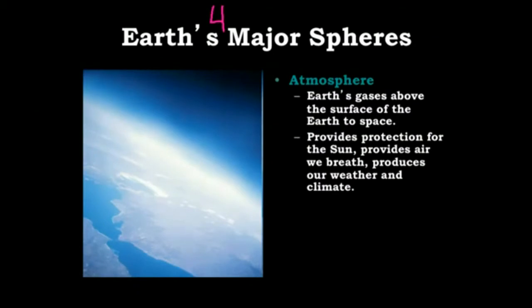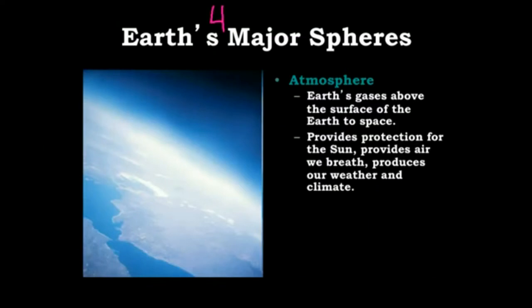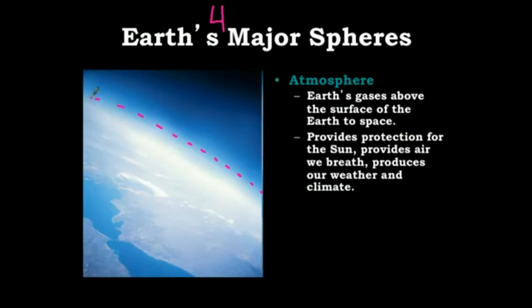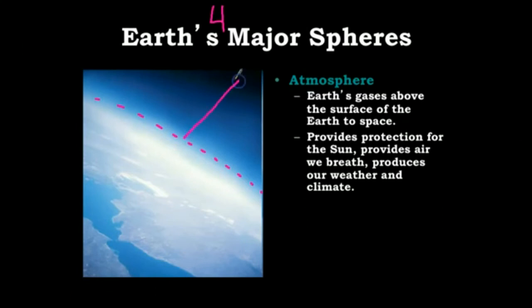So we're actually looking at a picture of the atmosphere on the edge of the Earth. So here is the edge of the clouds. The atmosphere goes up out into space. If you can see the change in color, that is because the further away you get from Earth, the less dense the gases are.